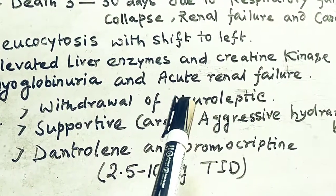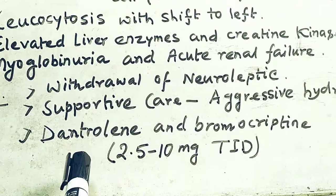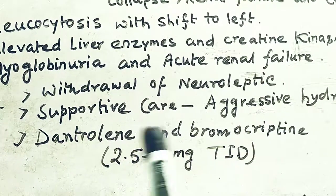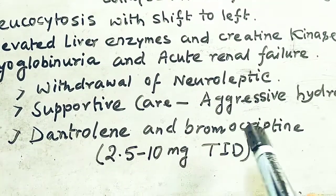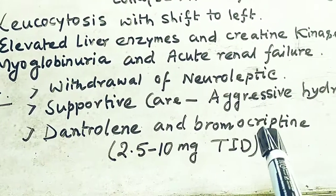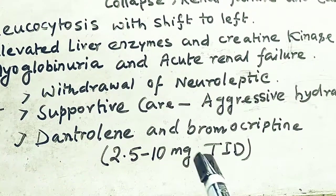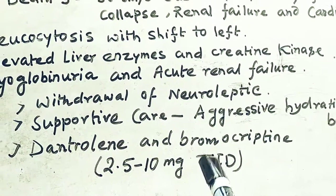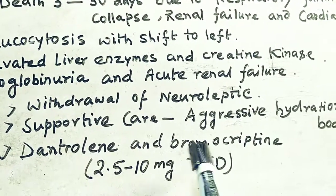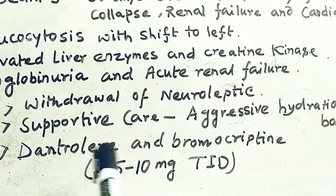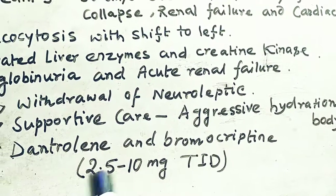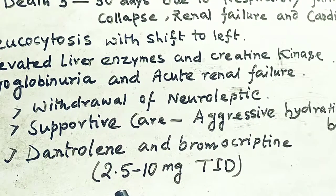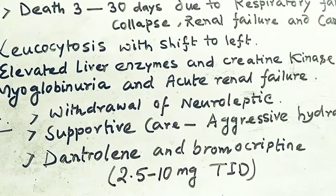The very important specific drugs are dantrolene and bromocriptine. You can use dantrolene alone, bromocriptine alone, or together — at a dose of 2.5 to 10 mg TID, meaning three times a day. Dantrolene and bromocriptine are one of the most important treatments for Neuroleptic Malignant Syndrome.